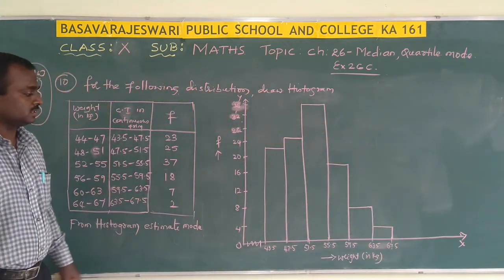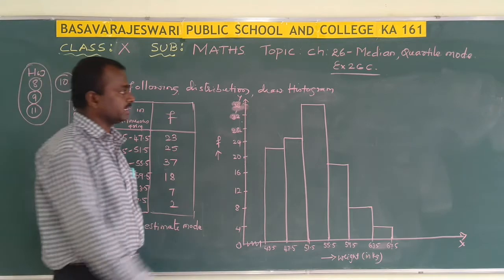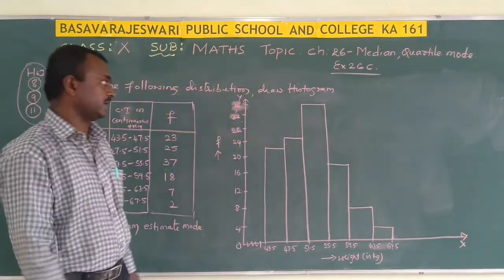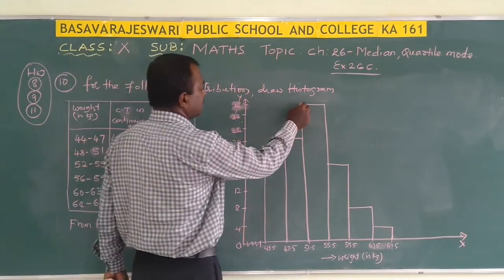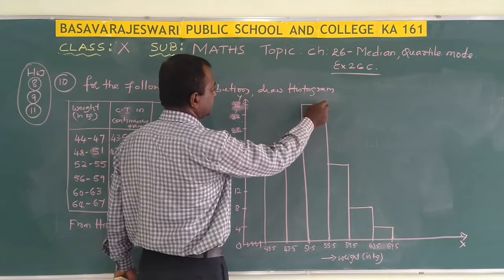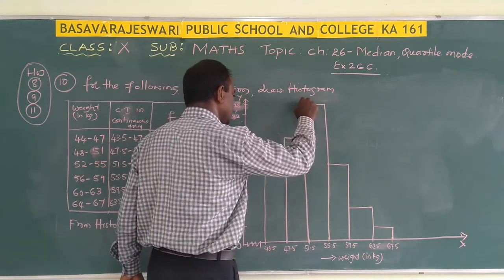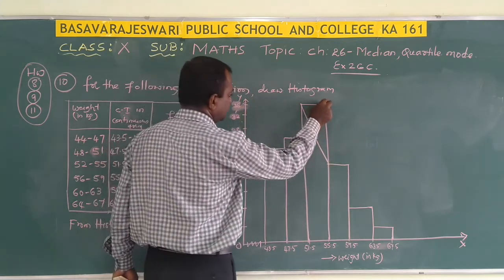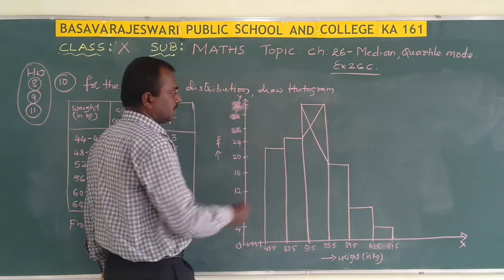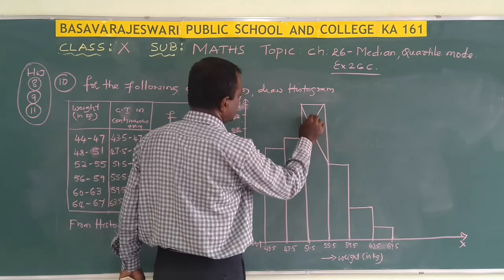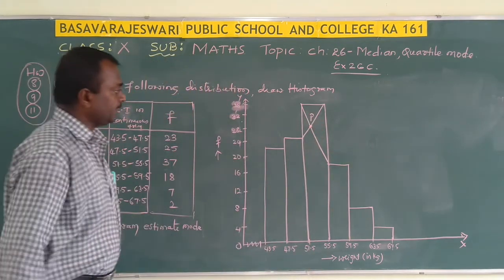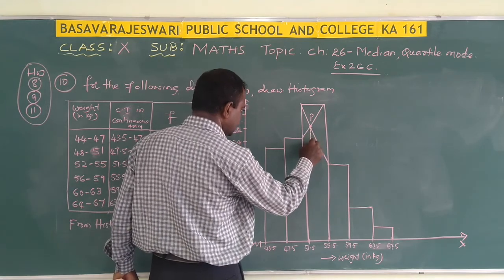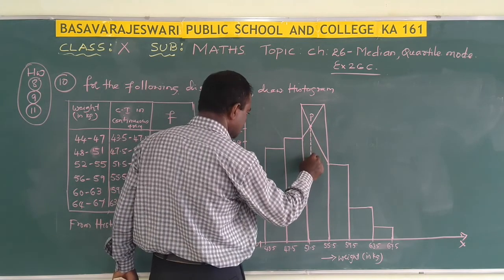So this is the histogram. In this we have to identify the highest rectangle — this is the highest rectangle. From the ends of the upper corners of the highest rectangle, we have to draw a line segment to the opposite adjacent rectangle. Mark this point as P. From P we have to draw a line perpendicular to the x-axis.